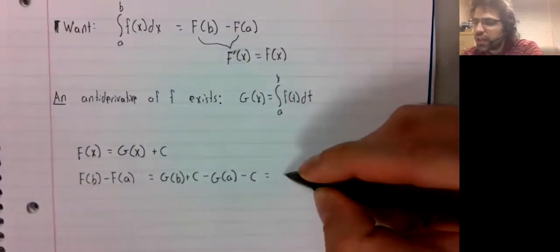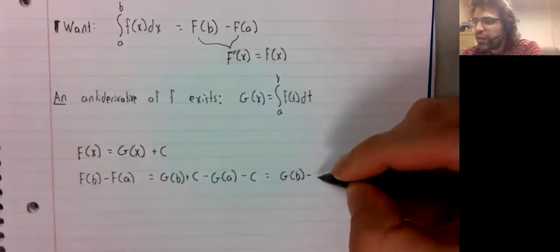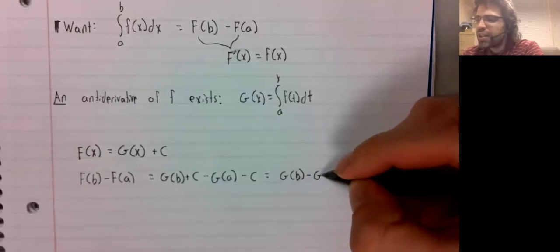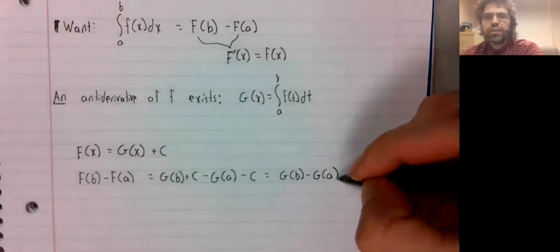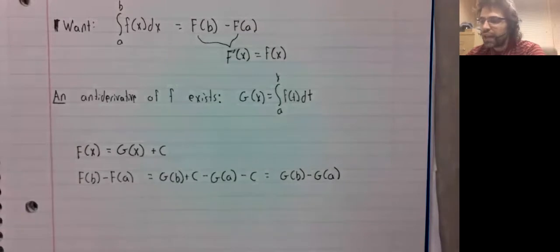Our c's cancel, and we get that F of B minus F of A is g of B minus g of A.